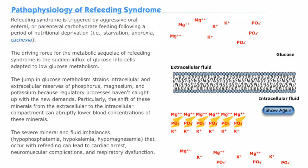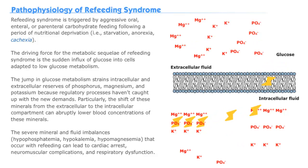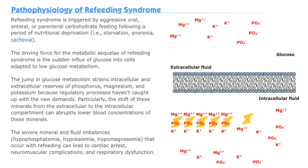Due to the sudden influx of glucose into the cells, which have previously adapted to a low-glucose metabolism, the malnourished body's regulatory processes become quickly overwhelmed, and the extracellular reserves of potassium, phosphate, and magnesium become quickly depleted.